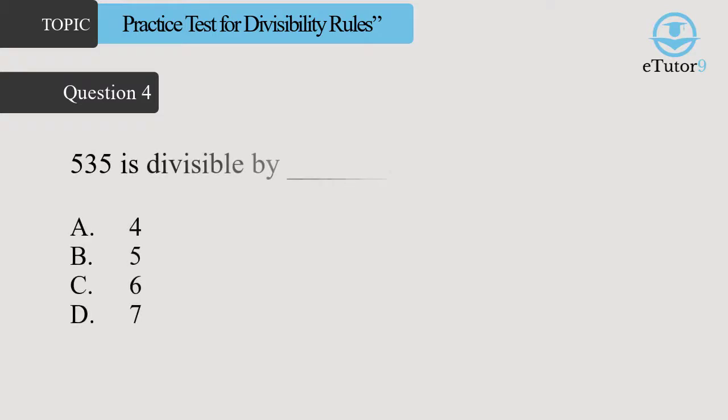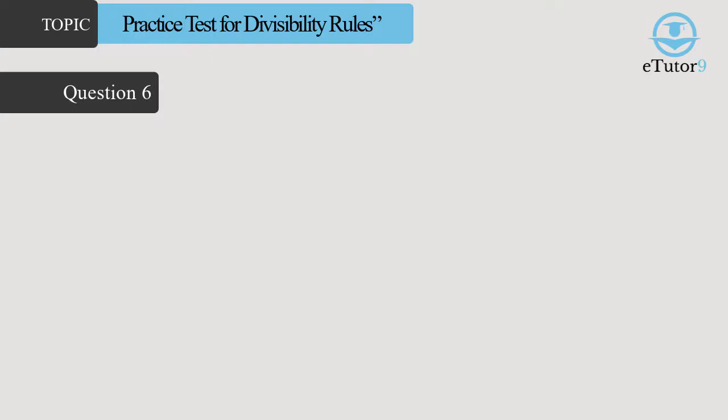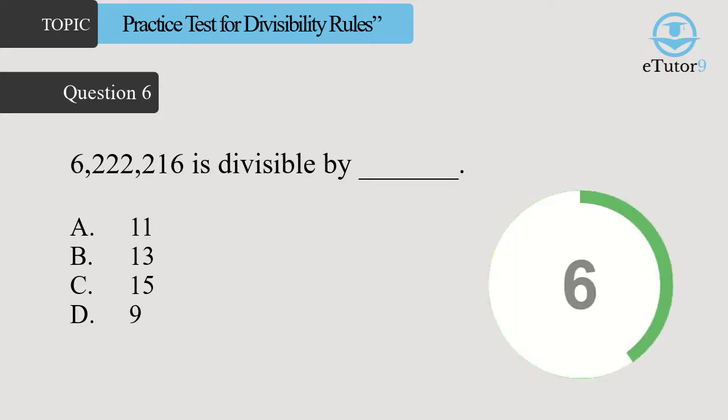Question 4: 535 is divisible by dash. Answer is D, 5 and 7.